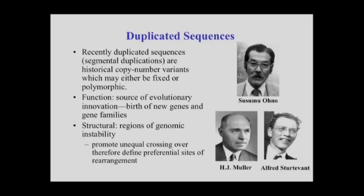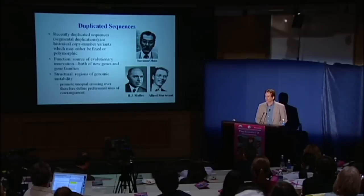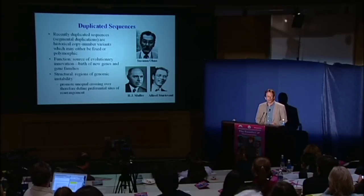The second perspective is really with respect to the structure of the genome. When you create additional copies of duplicated sequences, you predispose that genome — and that area more precisely — to additional rounds of deletion and duplication. This was recognized by H.J. Muller and Sturtevant long before we even knew what DNA was. They observed the bar locus in Drosophila as a site of genetic instability related to duplication. Throughout this talk I'll touch on both the role of duplicated sequence in great apes and humans in terms of new gene emergence, and also their role in genetic instability.